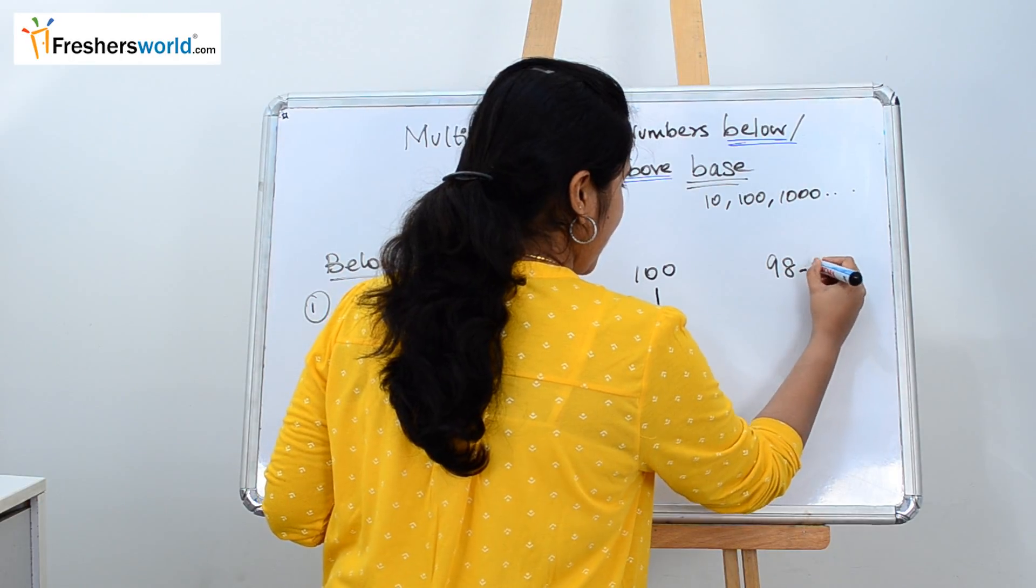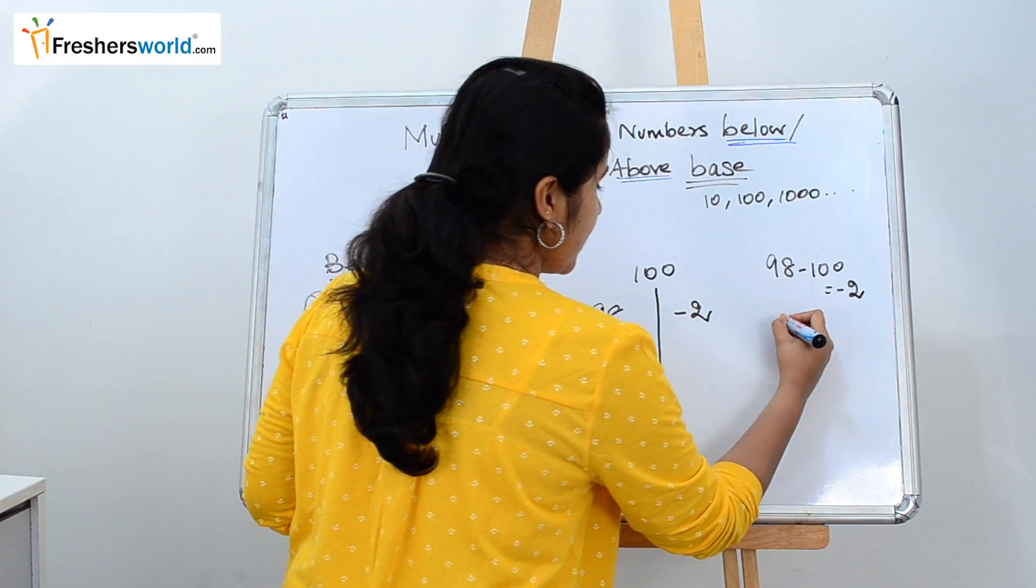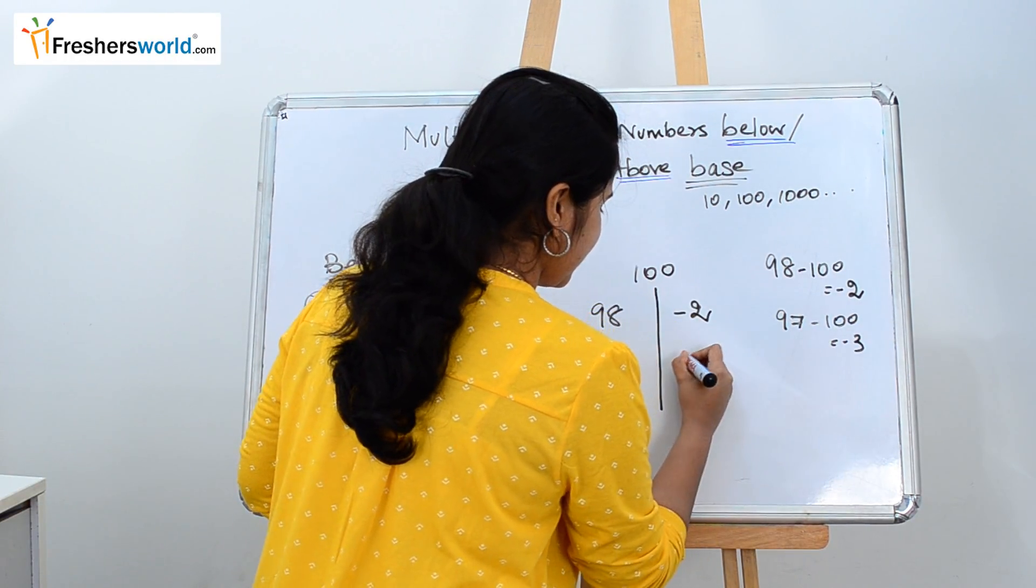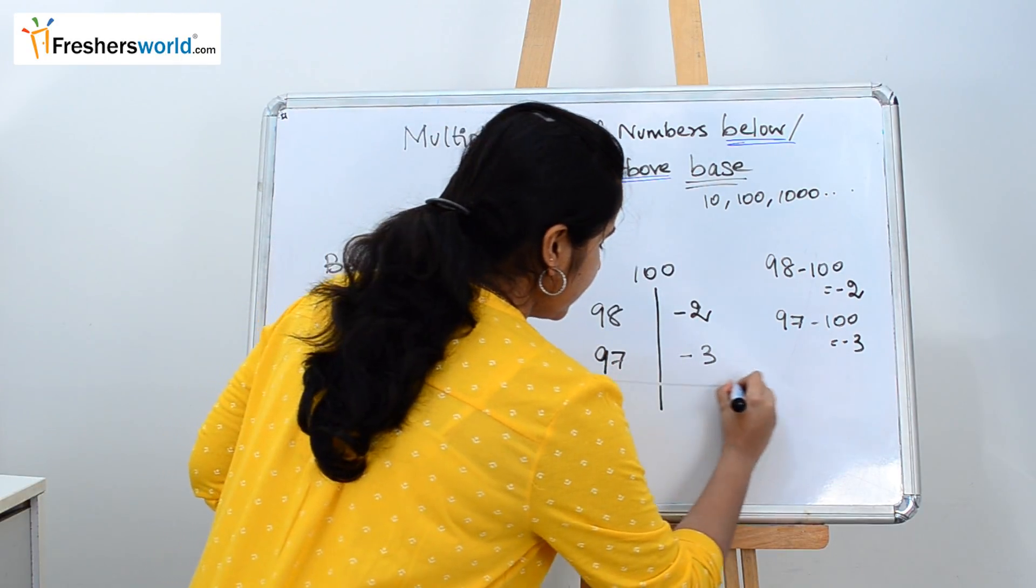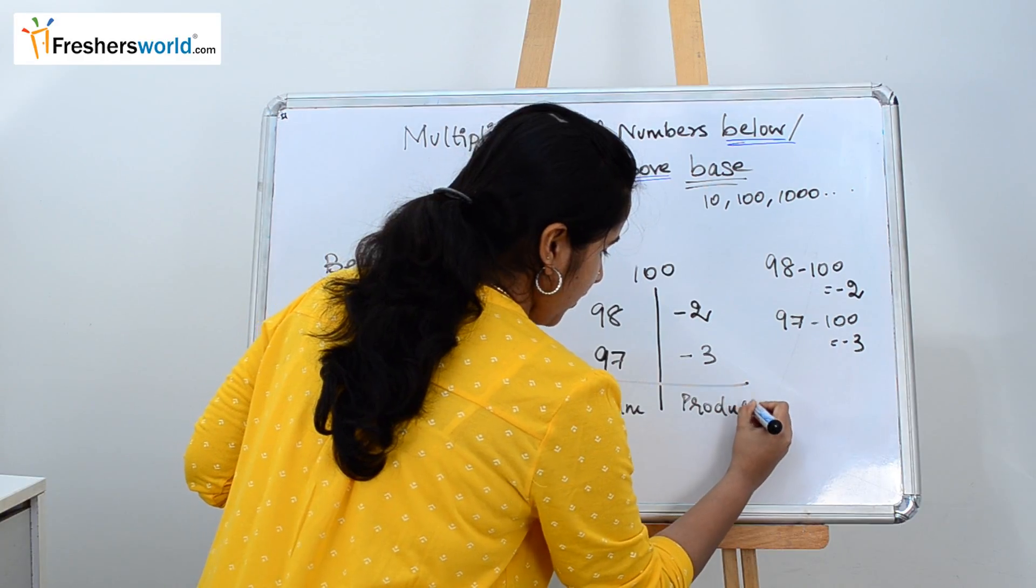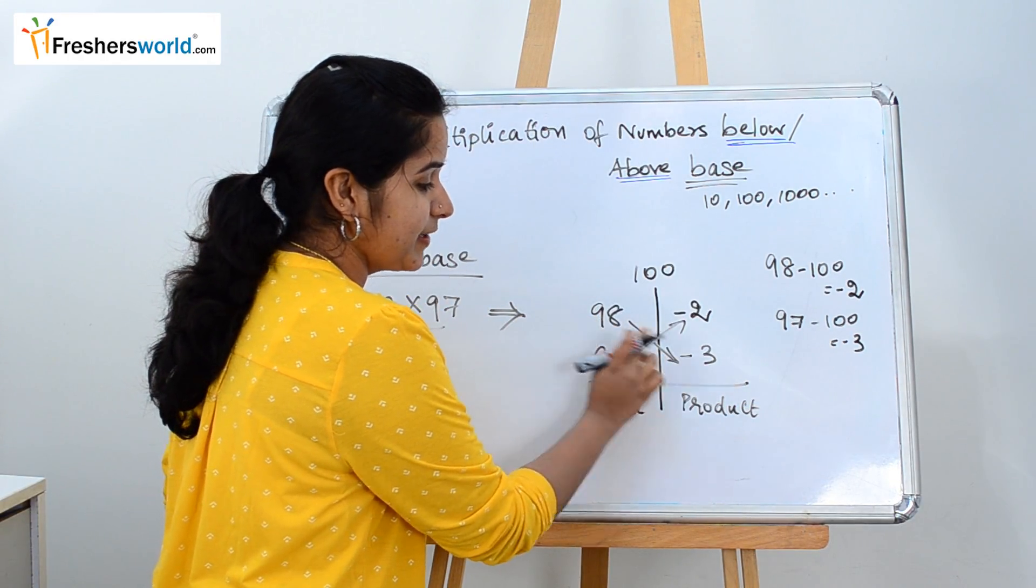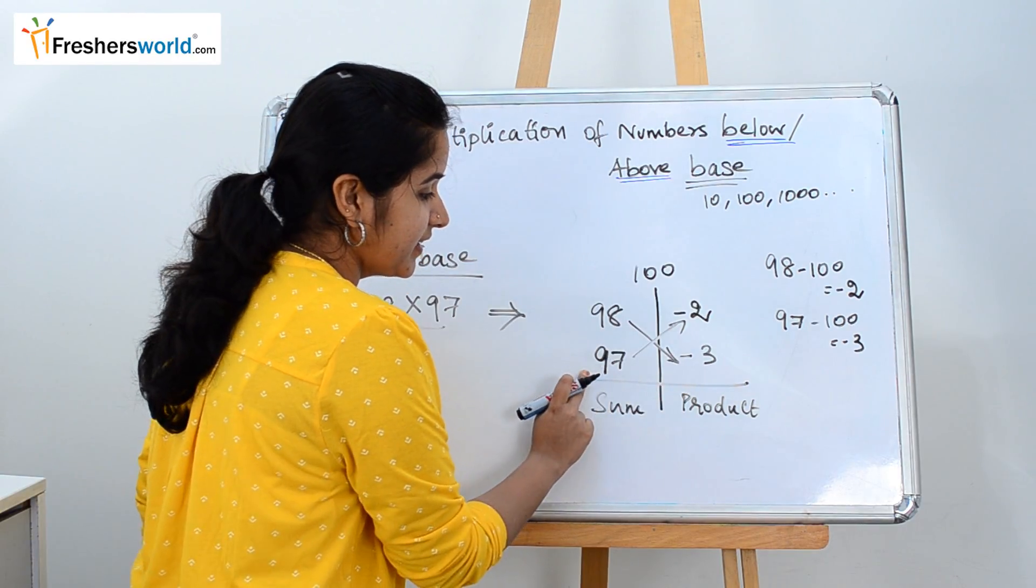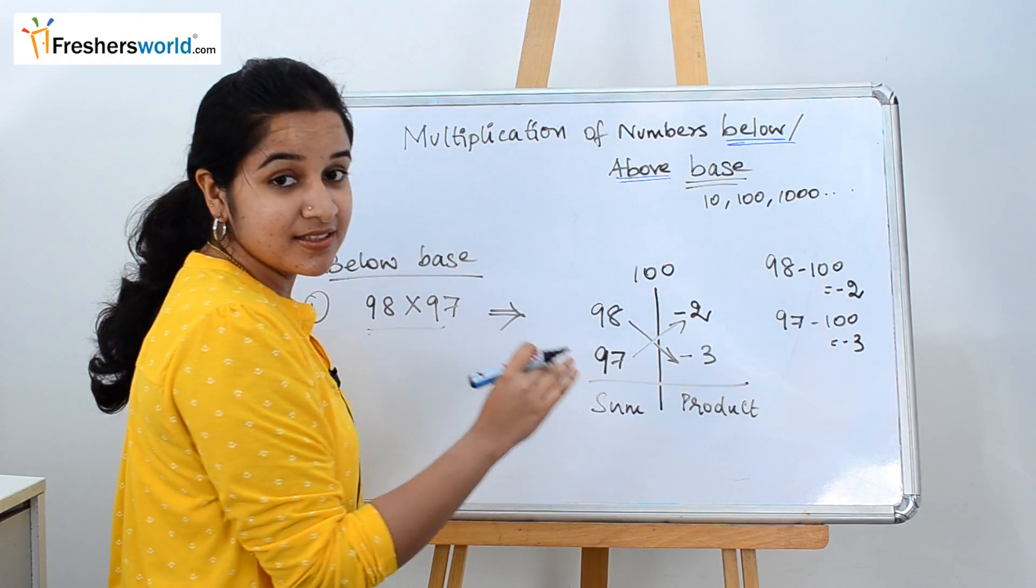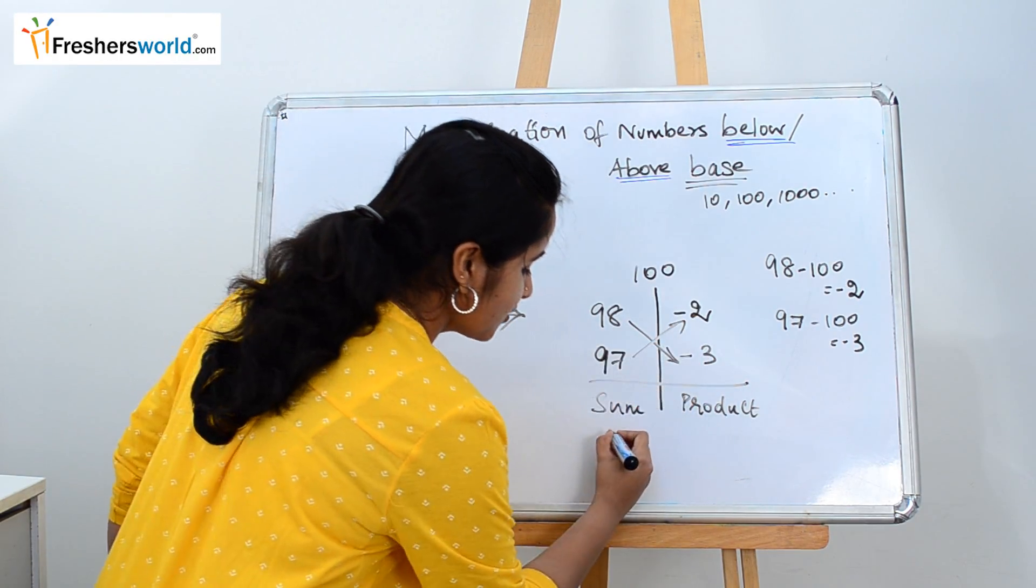So 98 minus 100 is minus 2. Write it here. Similarly 97 minus 100 is minus 3. Write it here. So what we do here is consider this as sum and this as product. We have to first take the sum of either 98 minus 3 or 97 minus 2. Both the sum is going to be the same. So 98 minus 3 is 95. 97 minus 2 is 95. So write it here.